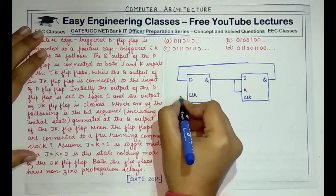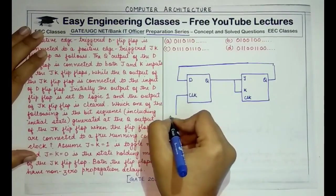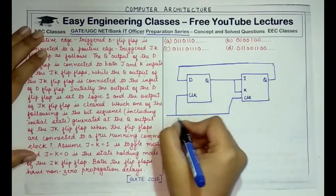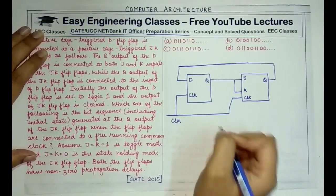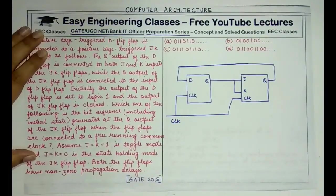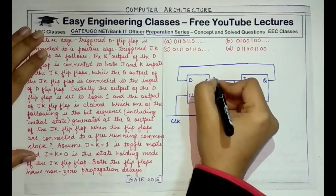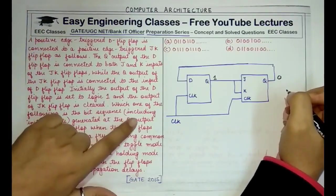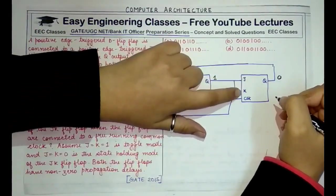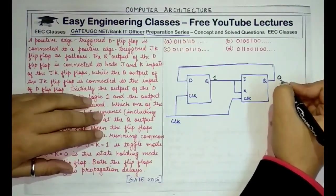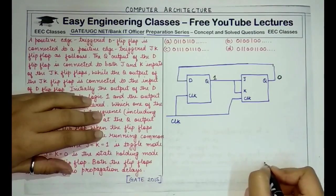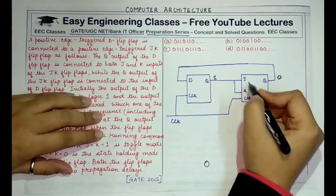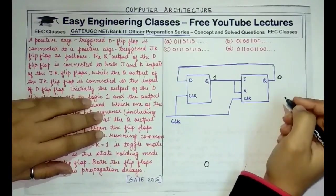There is a common clock going into both flip-flops. The initial values are: D flip-flop output is 1 and JK flip-flop output is 0. Since we have to consider the initial state while generating the output sequence of the JK flip-flop, the first value in the sequence is 0, because 0 is the initial state.